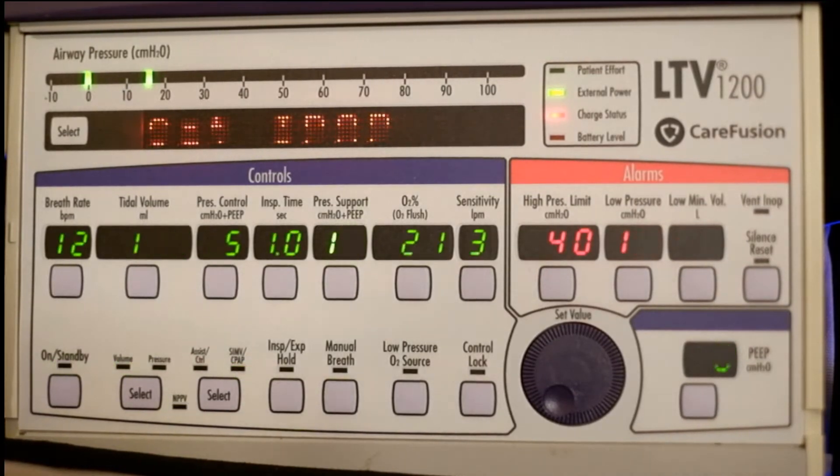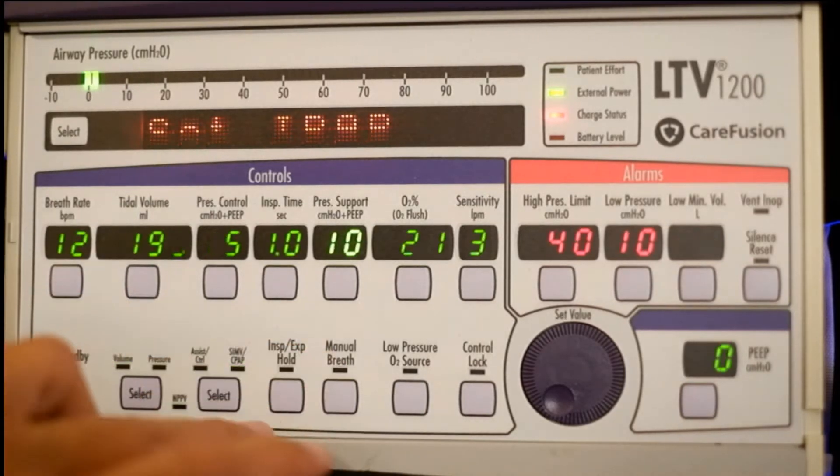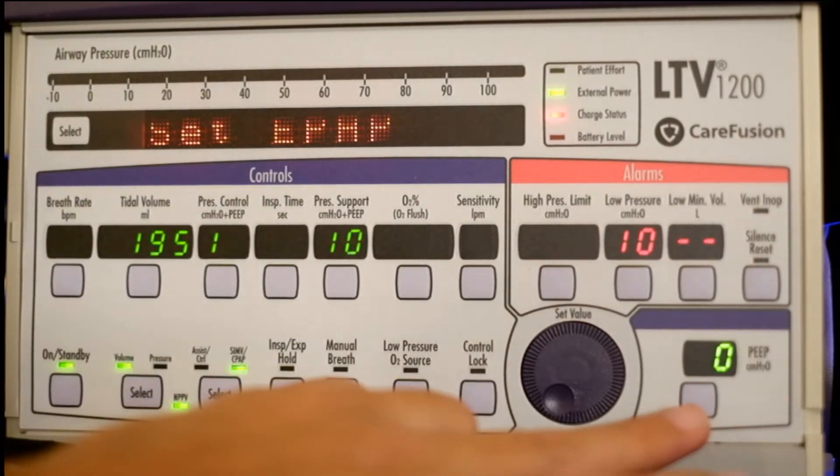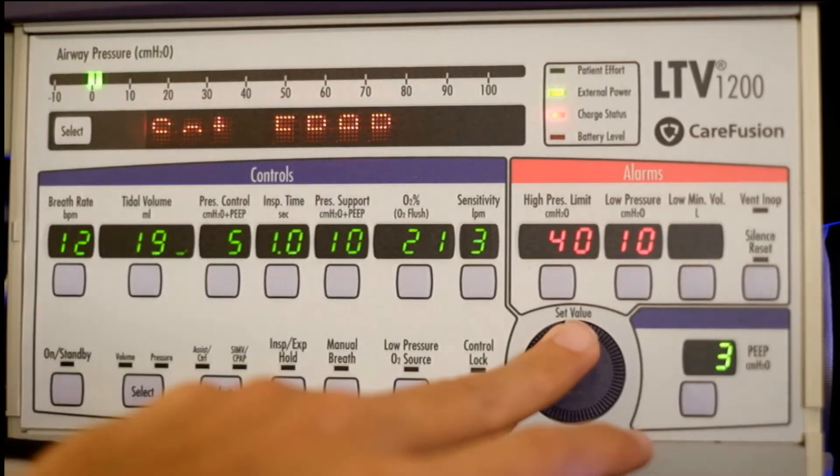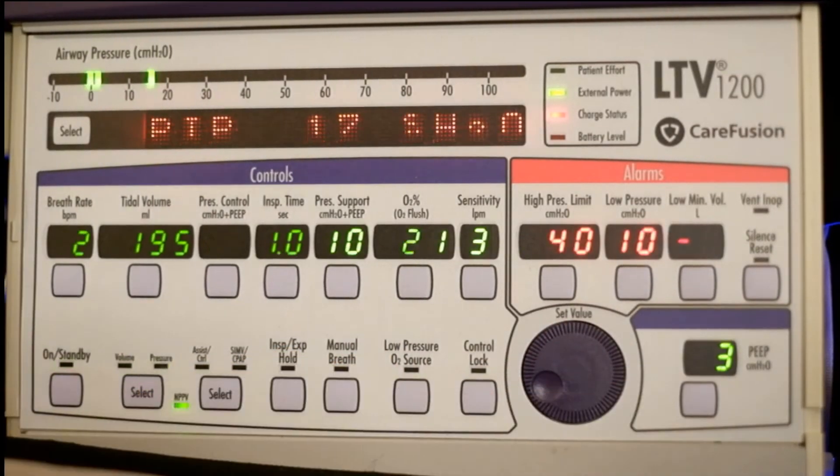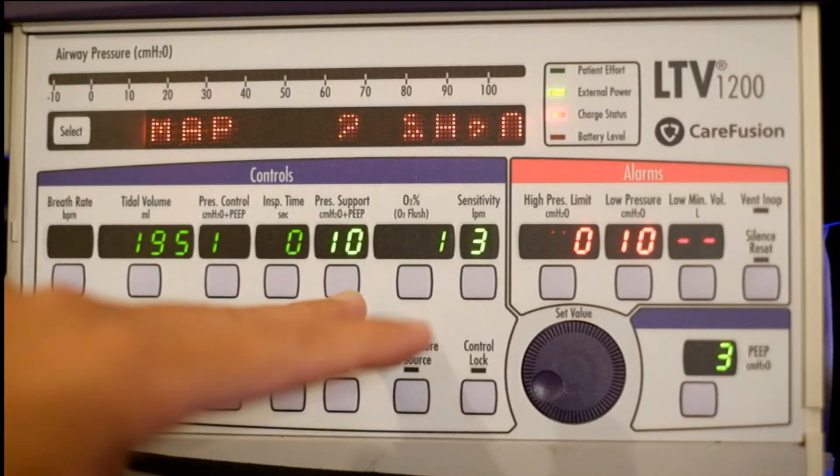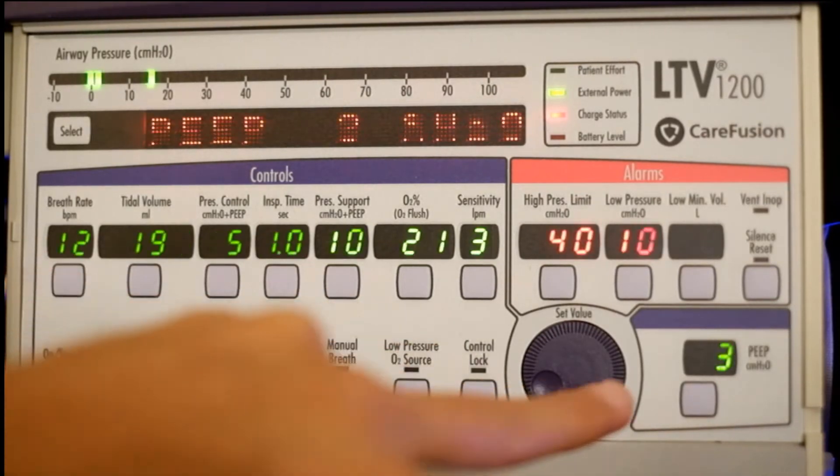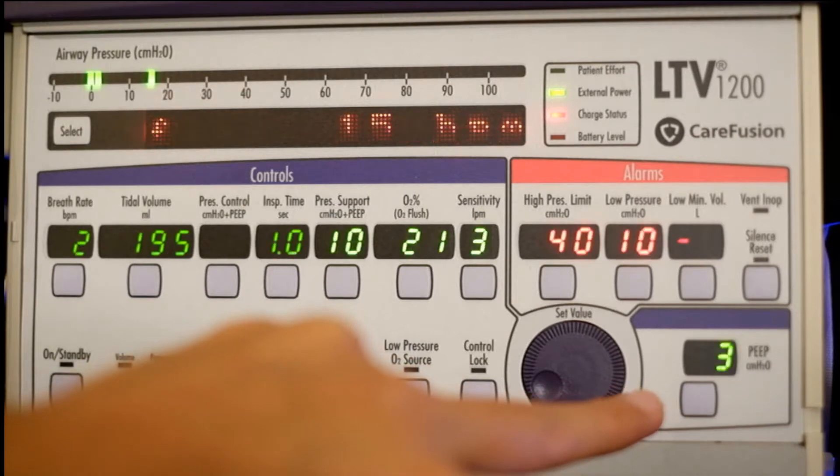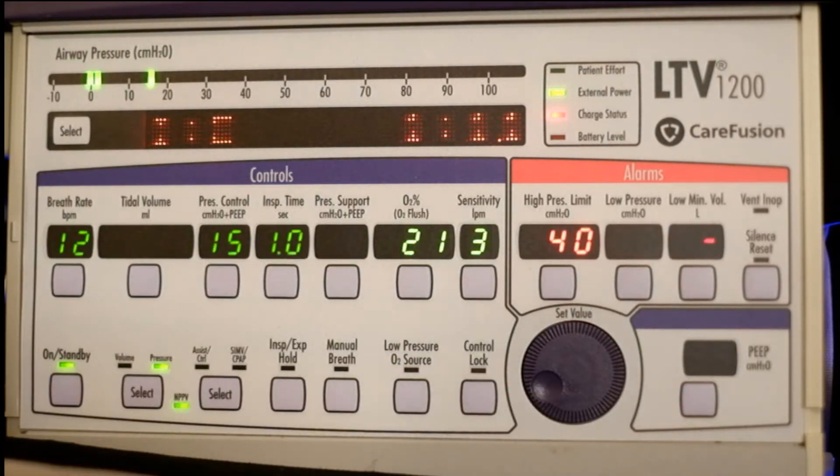So the first thing it's going to ask you is to set the IPAP. IPAP is basically pressure support, and EPAP is PEEP or CPAP - they both mean the same thing. We'll set the PEEP to three. So now the patient is receiving 13 of pressure support over a PEEP of three. Remember, that pressure support is IPAP and PEEP is EPAP.